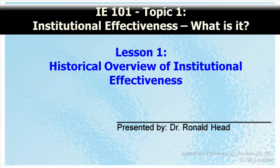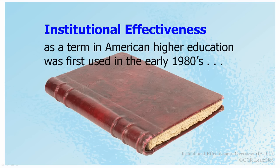Lesson one is a historical overview of institutional effectiveness. Recently, a distinguished president of a community college, James Hudgens, and a professor of higher education, Dick Alford, tried to remember when they had first heard the term institutional effectiveness.